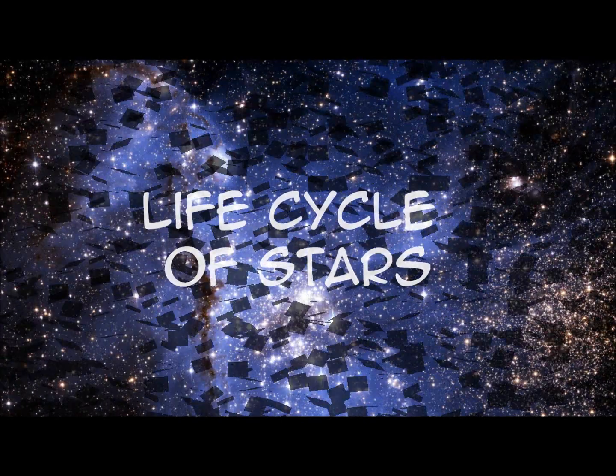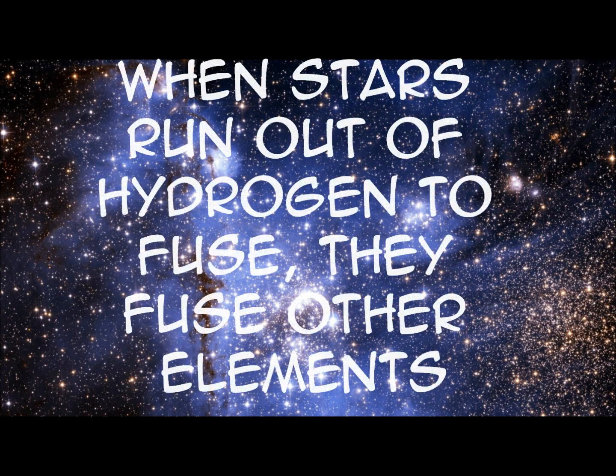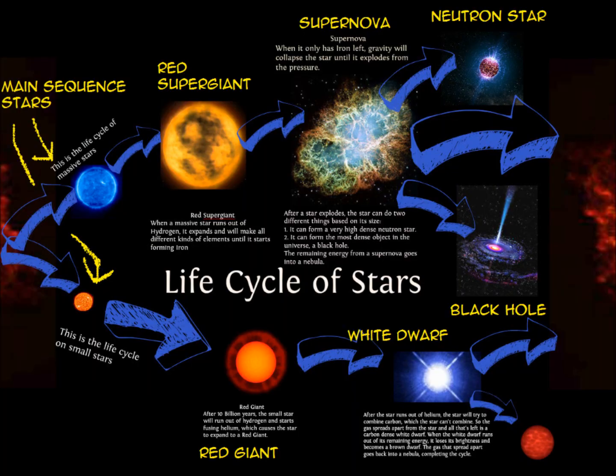Life Cycle of Stars. When stars run out of hydrogen to fuse, they fuse other elements. Main sequence stars become red giants, and bigger main sequence stars become red super giants. They fuse helium.